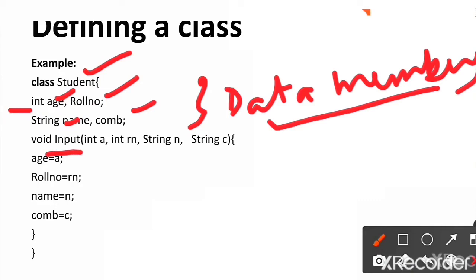which accepts arguments like the age of the student, the role number of a student, the name of the student and the combination. And then, I am assigning those values to these data members using